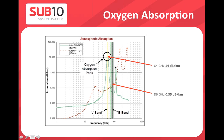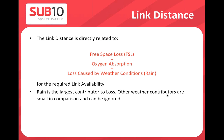This is both an advantage and disadvantage: V-band cannot achieve the same link distances as E-band, but the advantage is excellent frequency reuse enabling high-density networks. The link budget includes free-space path loss, oxygen absorption (approximately 14.5 dB/km for V-band), and rain attenuation. Rain attenuation uses statistical formulas and ITU data to calculate attenuation based on rain parameters.